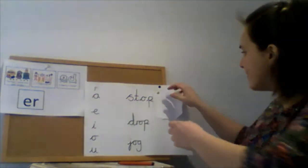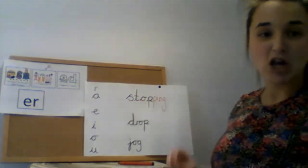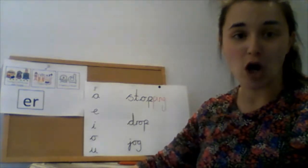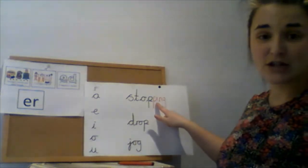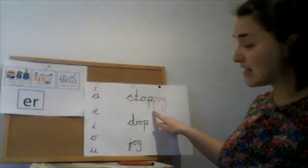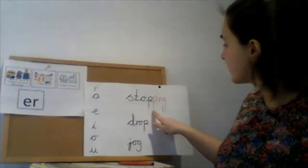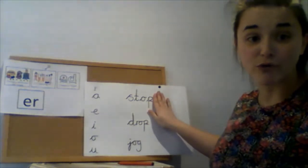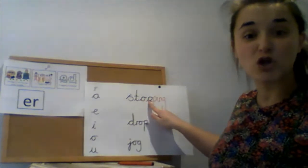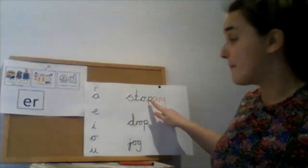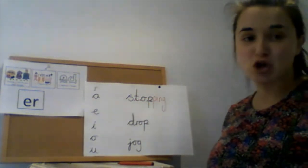Let me show you what I mean. I have here the word 'stop', and I wanted to turn the word 'stop' into 'stopping'. So I couldn't just add the suffix -ing — can you see I've added another p letter? I've doubled the last sound in the word. It was 'stop', that was the root part of the word. But because of this short vowel, I had to double the last letter before I added my suffix -ing. Stopping.